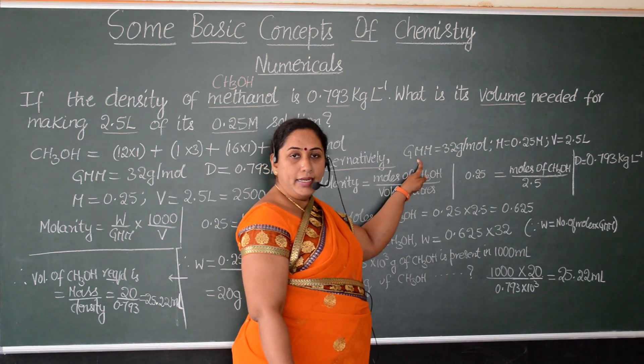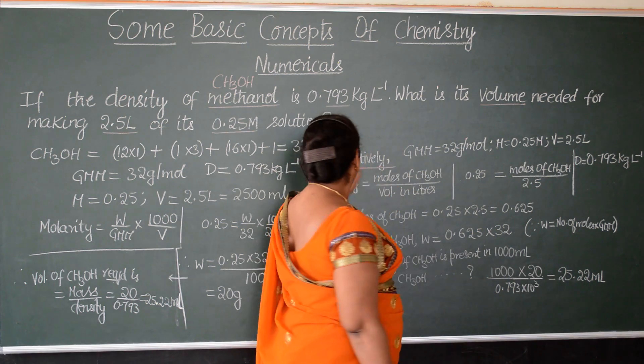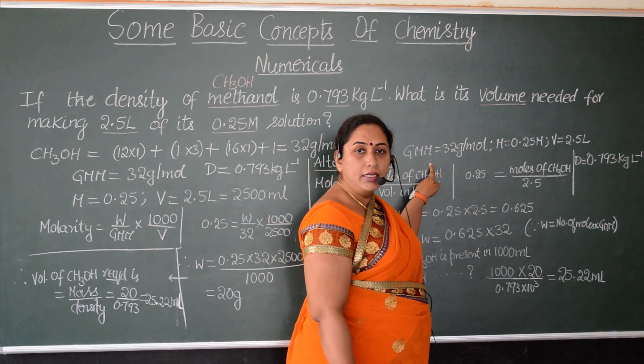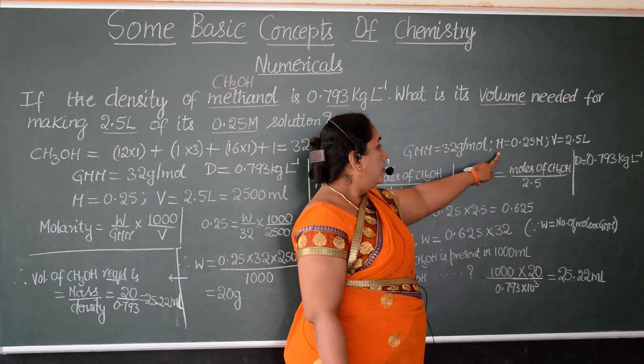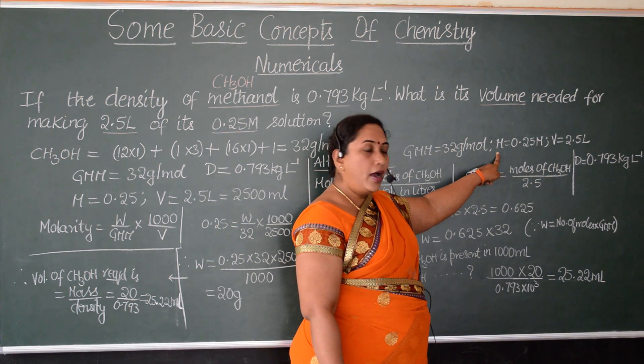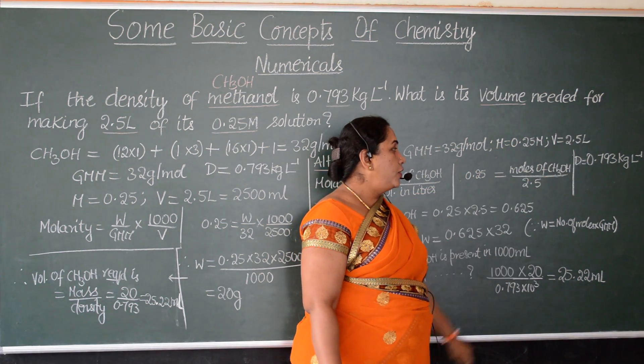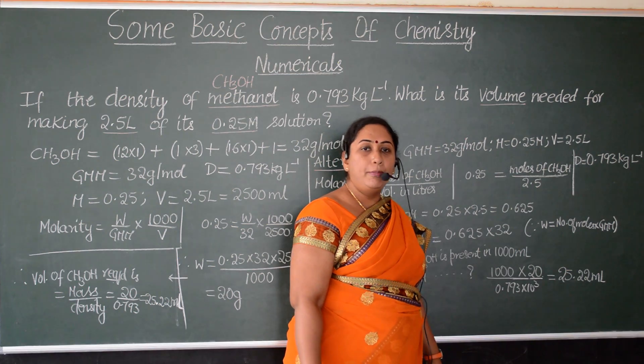So, let us write down all the data. Gram molecular mass to be found out in the same method. So, that gives the value as 32 gram per mole. Molarity is 0.25 and volume is 2.5 liters. Density is 0.793 kg per liter.